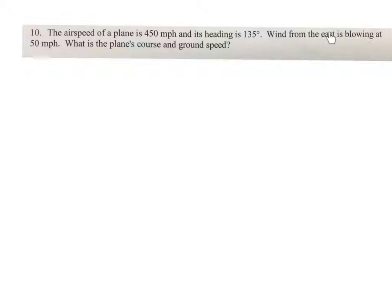And then we have a wind, the second vector is blowing from the east, which means it's blowing to the west at 50. So what is the plane's course? In what direction is it flying from due north? And how fast is it going based upon an observer on the ground?